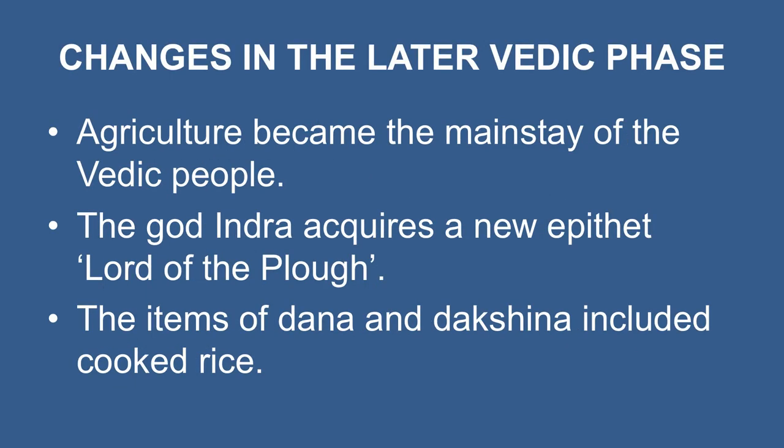During the later Vedic phase, agriculture became the main stay of the Vedic people. Many rituals were introduced to initiate the process of agriculture. Texts speak of plowing with six and eight oxen. The buffalo had been domesticated for agricultural purposes and was extremely useful in plowing the swampy land. The god Indra acquires a new epithet — 'lord of the plow' — in this period. Apart from barley, people now cultivated wheat, rice, pulses, lentils, millet, and sugarcane.